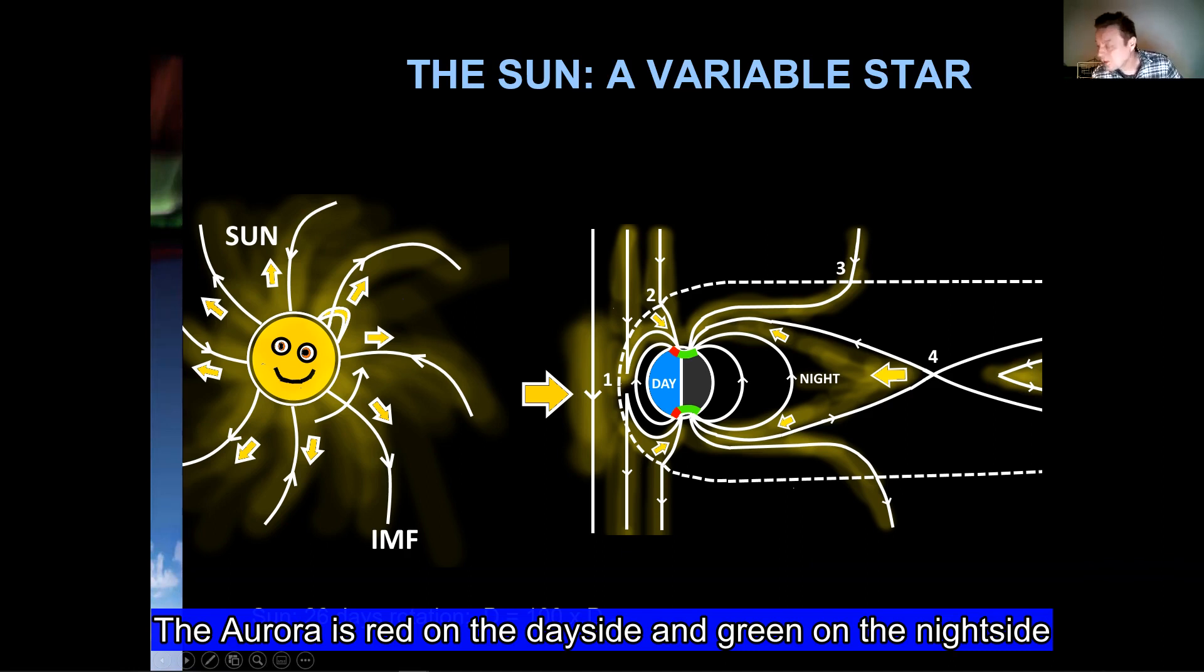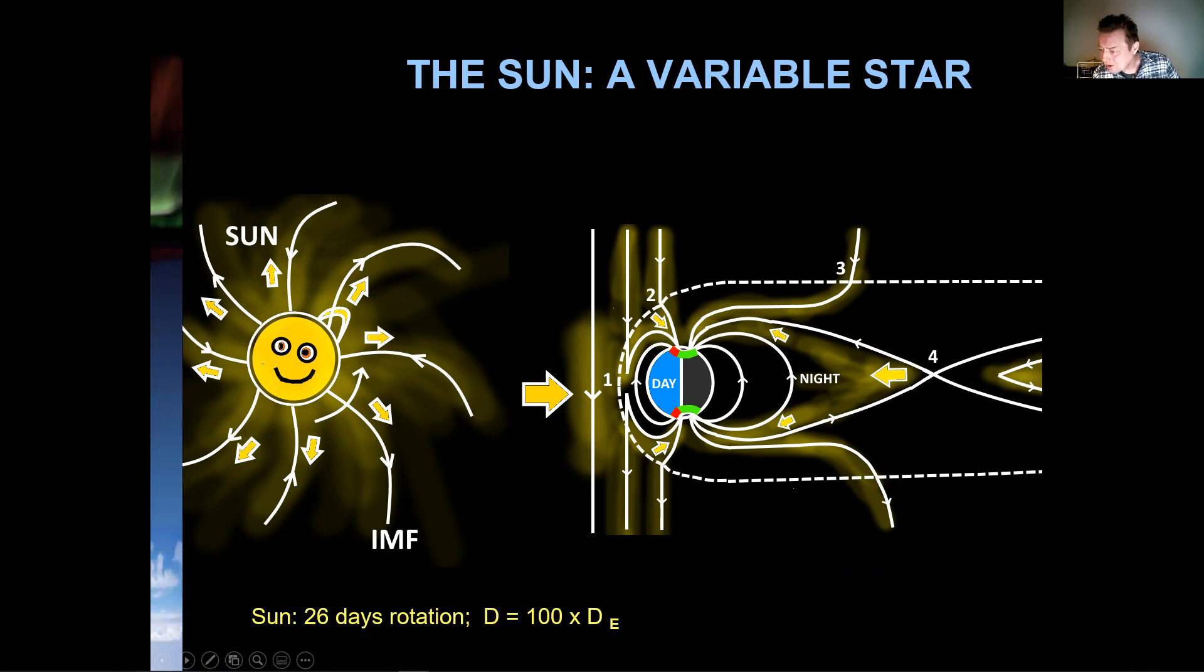And also notice that these impact areas due to symmetry of the whole system are formed like ovals where the center is the magnetic poles.